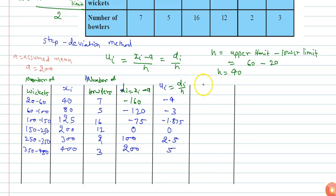The next column is for the product of each fi times ui. So the next column is fi into ui, where fi is the number of bowlers.